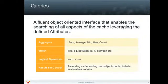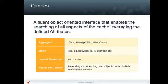The eHcache query language is a fluent object-oriented interface used for searching all aspects of the cache, leveraging the defined attributes. In eHcache search, you can do aggregation — gathering things like counts, sums, mins, maxes, and averages on your attributes.